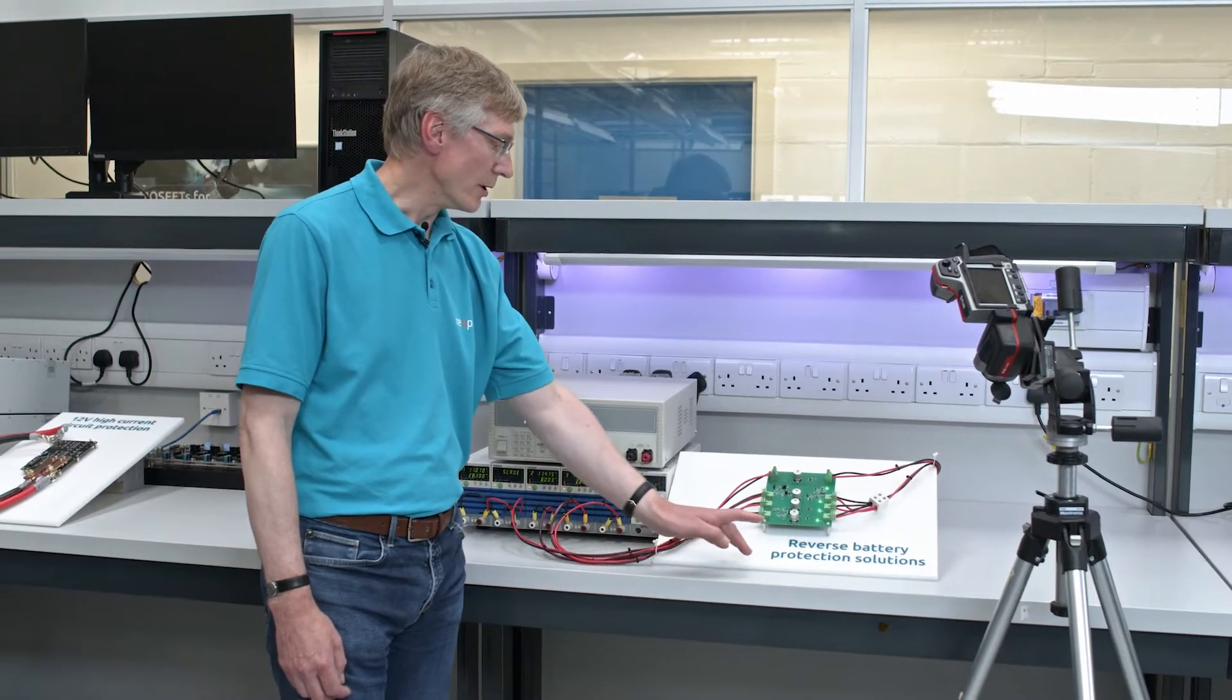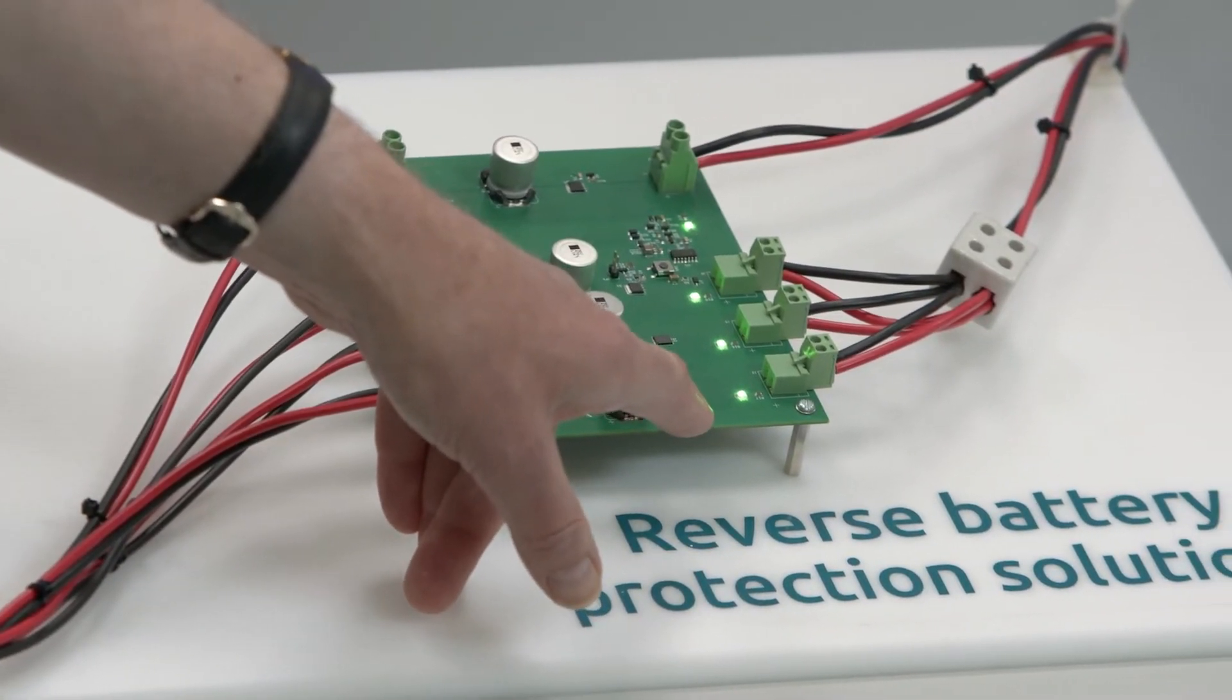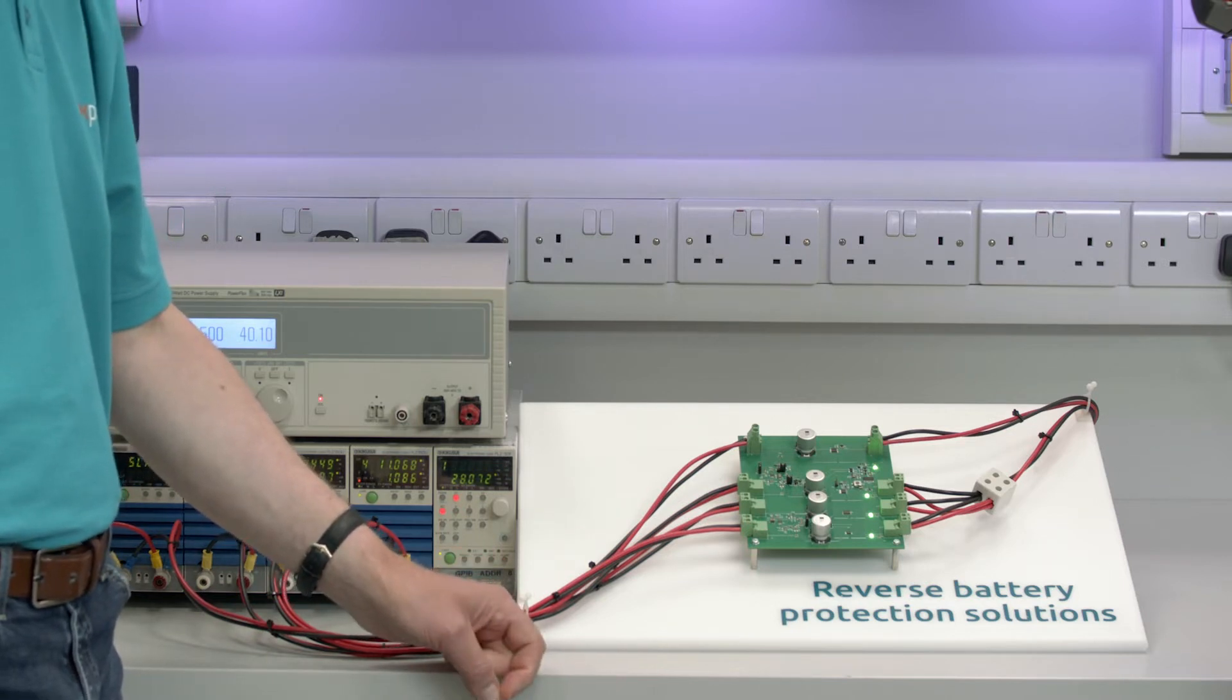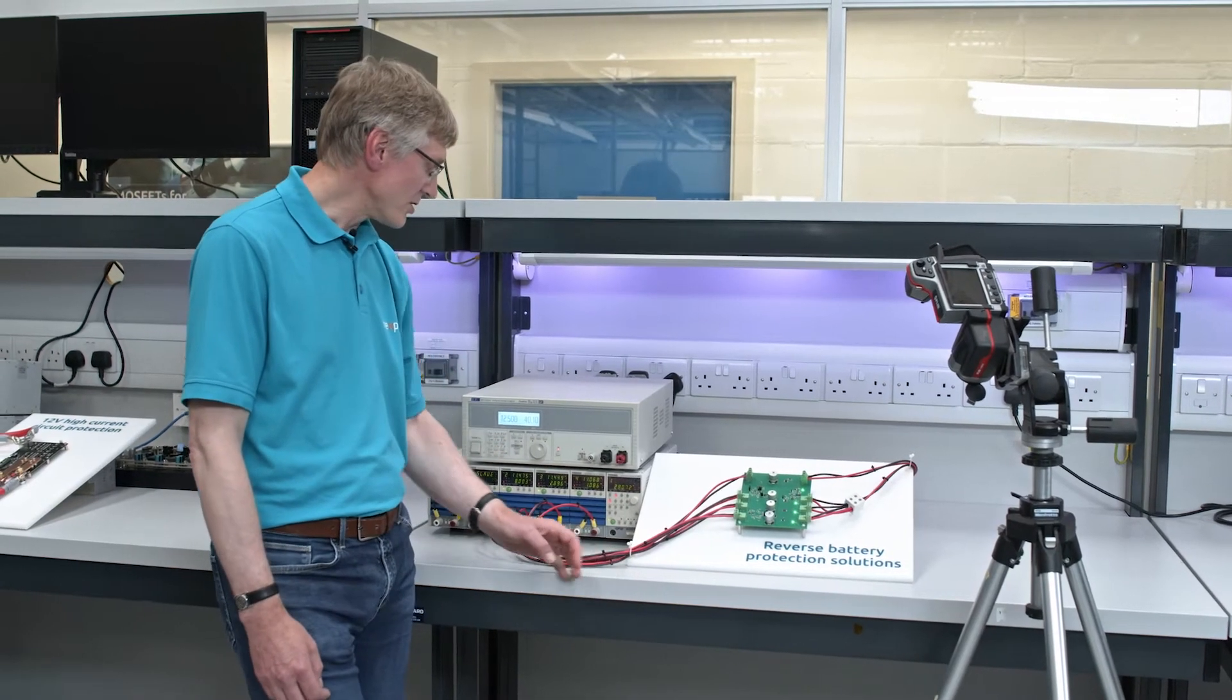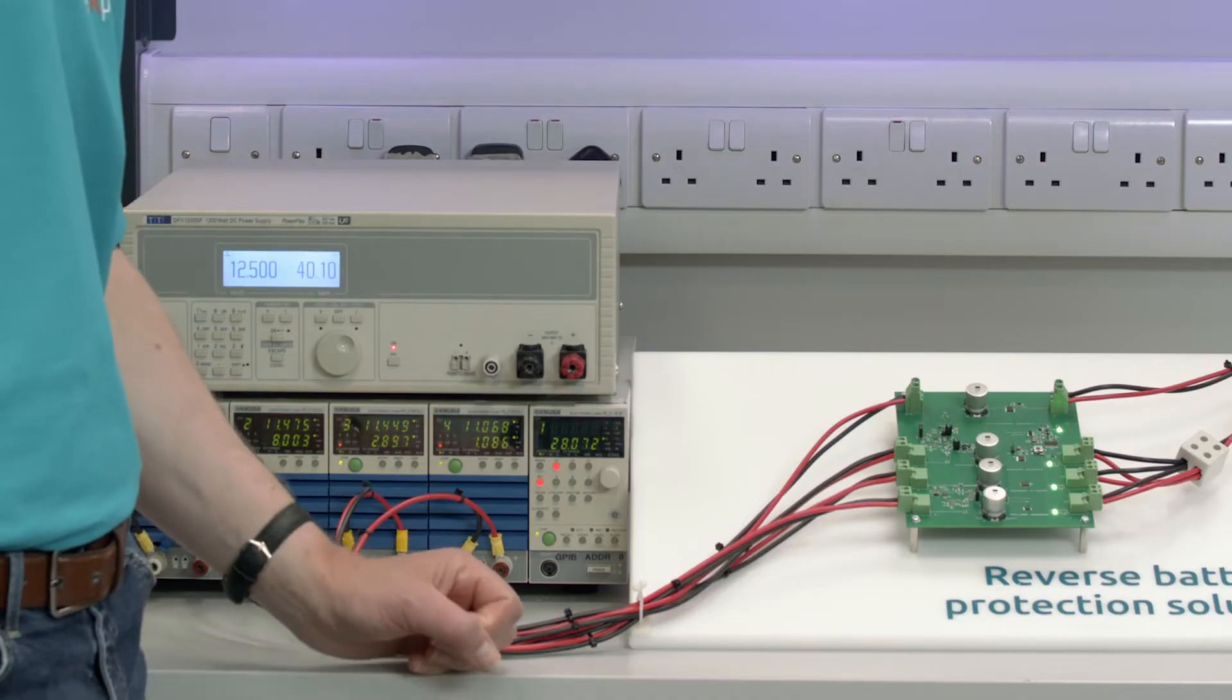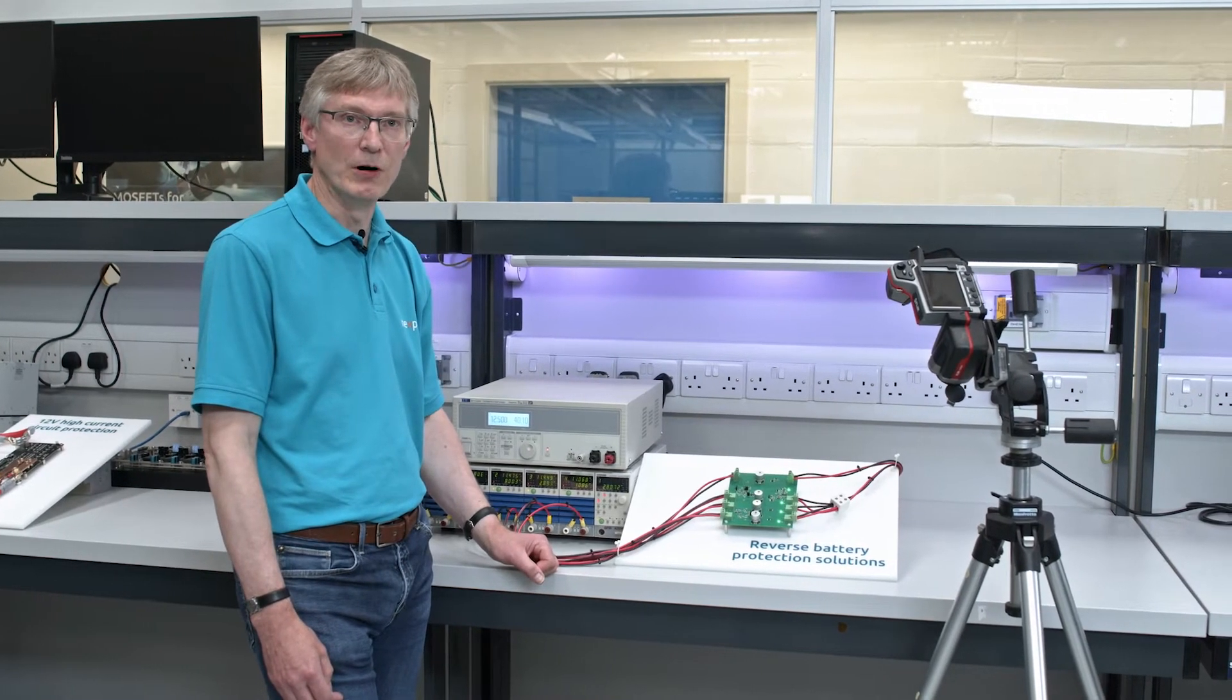In the first case we're going to look at the PN junction rectifier here. This is in a CFP5 package, it's rated at 200 volts and is presently conducting about just over one amp. It's got a voltage drop of about 0.75 volts and the power dissipation is about 0.8 of a watt.